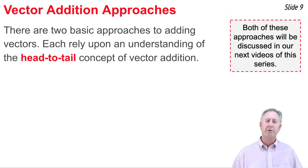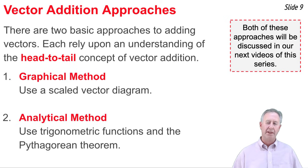There are two basic approaches to adding vectors to determine the resultant. Both of the approaches rely very heavily upon this head-to-tail addition concept. The first approach is called the graphical method. In the graphical method, we use a scaled vector diagram in order to determine the resultant. This is the topic of our very next video in this series. The second approach is sometimes called the analytical method. And that's when we rely upon trigonometric functions such as sine, cosine, and tangent, and upon the Pythagorean theorem in order to determine the resultant. Those lessons are coming up right after our very next one.